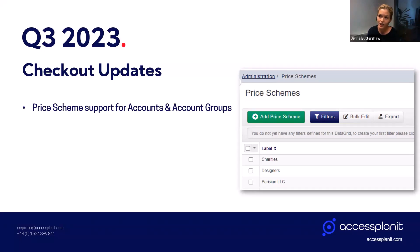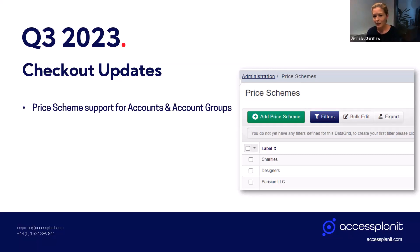Price schemes are essentially a way of you overriding prices for certain groups of users. They're a little bit different to discounts — discounts are a value taken off the amount of the booking, whereas price schemes are more like a fixed, agreed, overridden price for certain customers or certain groups of customers.